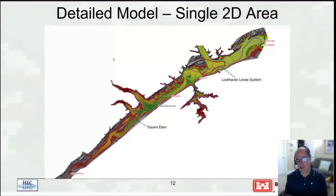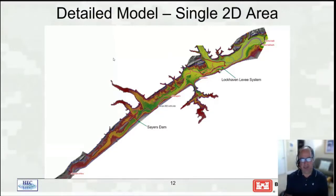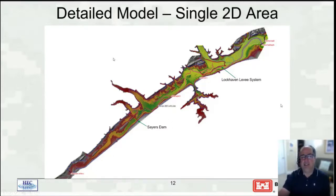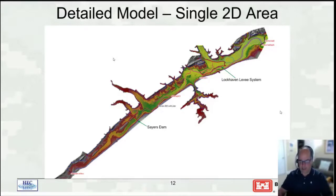This is Bald Eagle Creek, the main dataset for workshops this week. Bald Eagle Creek is in Pennsylvania, a tributary to the West Branch of the Susquehanna. Here we have just a single 2D area, but it's a detailed model. We've got break lines, hydraulic structures inside the 2D area, levee systems, and a dam. Zooming in, here's the dam at the upstream end. For the dam, there's a hydraulic structure representing it inside the 2D area using what RAS calls an SA/2D area connection — which stands for storage area or 2D flow area hydraulic connection.